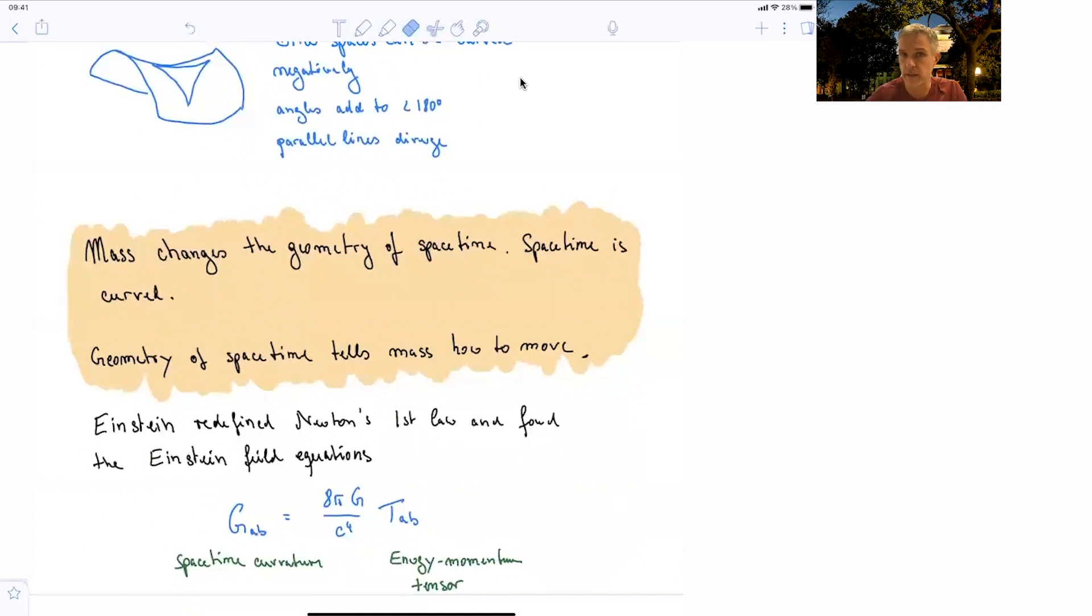Einstein used those findings in order to redefine Newton's first law and found the so-called Einstein field equation. On one side of the equation, there is a description of space time and its curvature. On the other side is the energy momentum tensor, the description of how energy and momentum of objects is distributed. Those two things, space time and energy and momentum, are interlinked in this equation.